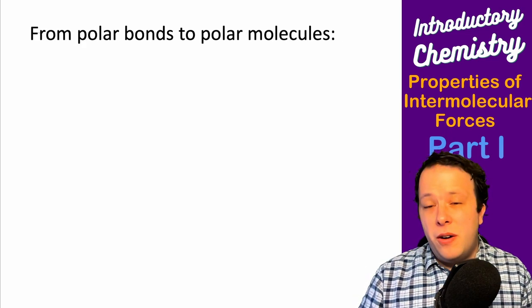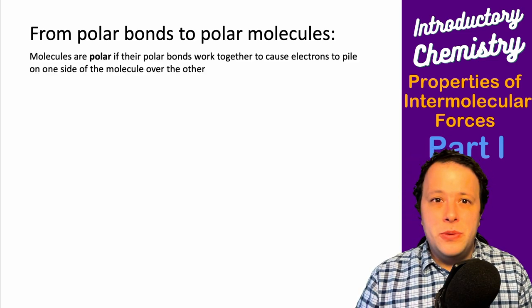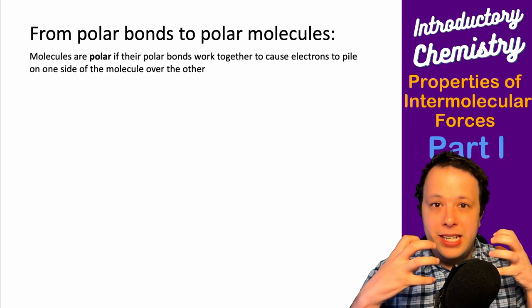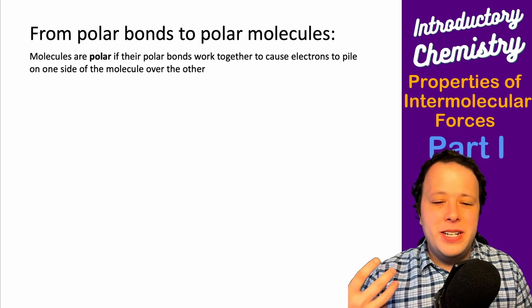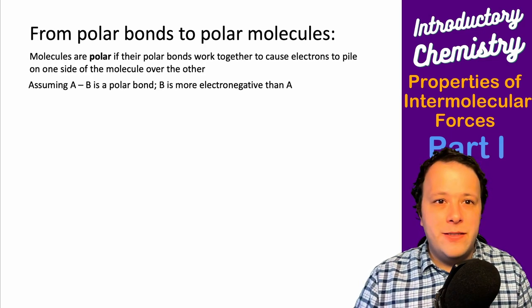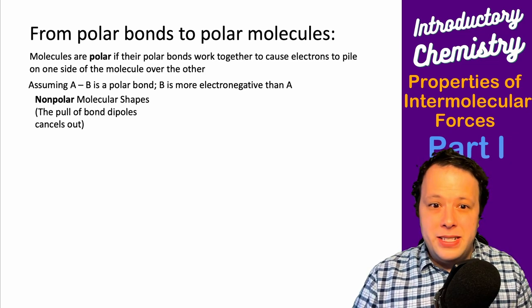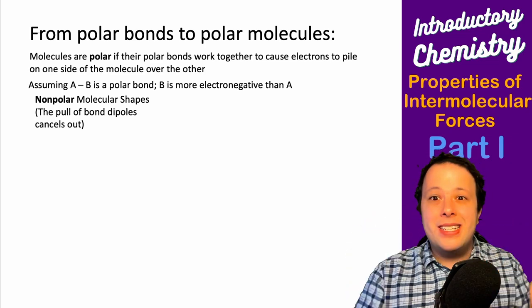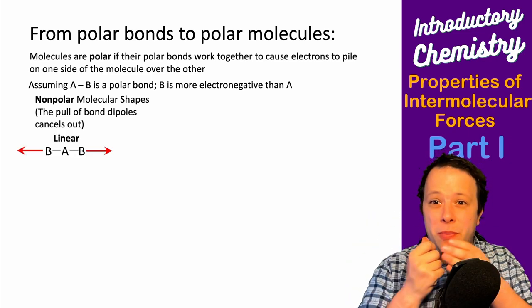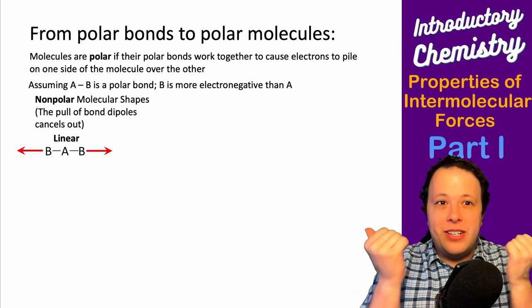Oxygen, nitrogen, fluorine, chlorine—if you see any of those atoms bound to carbon, they're typically considered electronegative, meaning they're most likely polar. Now, those are polar bonds, but that differs from a polar molecule. Molecules are polar when bonds work together, like a tug of war where more electrons pile on one side of the molecule versus another.